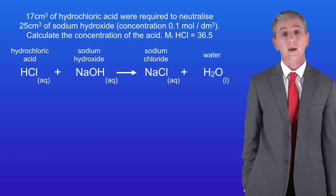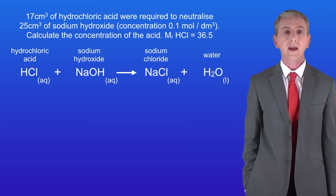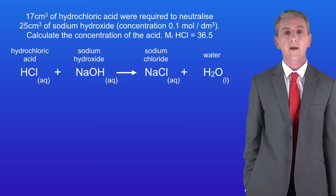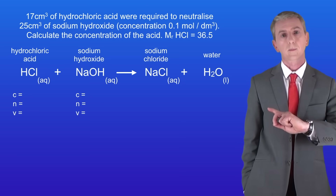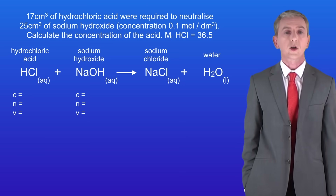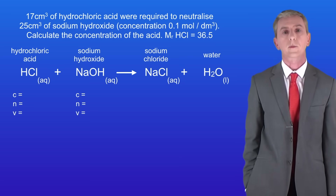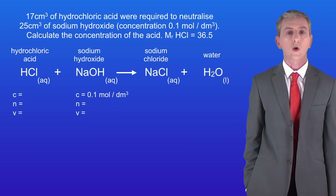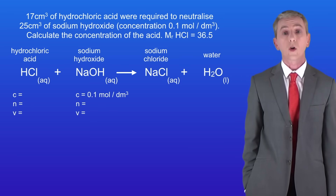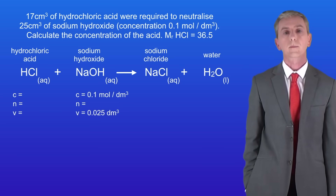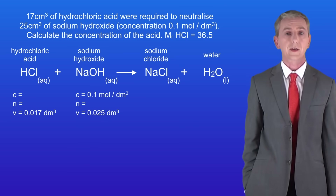So how do we tackle a question like this? We start by writing the letters C equals, N equals and V equals under both the acid and the alkali. Now we enter the information we've been given. Remember that we need to convert all volumes to decimetres cubed by dividing by 1000. The concentration of the sodium hydroxide is 0.1 moles per decimetre cubed and the volume is 0.025 dm³. The volume of the hydrochloric acid is 0.017 dm³.